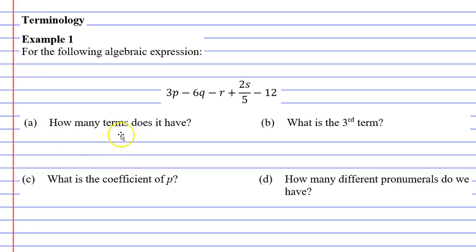Question A says, how many terms does it have? How many terms does this algebraic expression have? Well we can count 1, 2, 3, 4, 5 terms. And we can recognize terms because they are separated by the plus and the minus sign. So write that down. Question A has 5 terms.